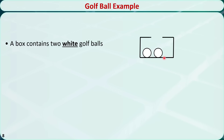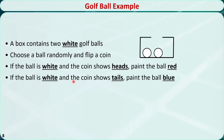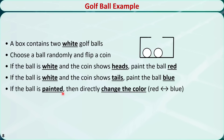A box contains two white golf balls. Choose a ball randomly and then flip a coin. If the ball is white and the coin shows heads, paint the ball red and put it back. If the ball is white and the coin shows tails, paint the ball blue and put it back. If the ball is already painted, directly change the color from red to blue or from blue to red and put it back, regardless of the coin result.